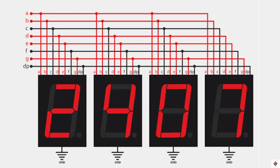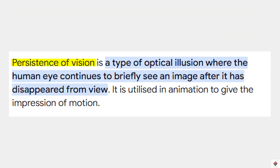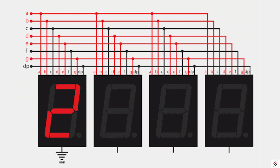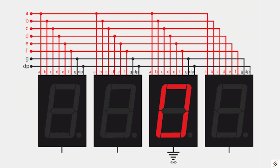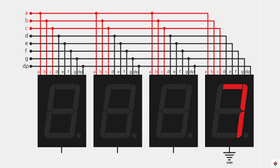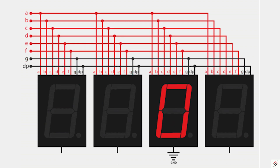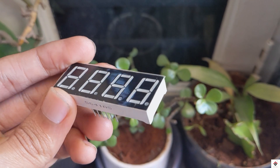To print different digits at the same time is practically not possible since all segment pins are common. This is where persistence of vision comes into play. For example, to display 2407: print 2 on the first digit, wait a short time, then switch it off; then 4 on the second digit, wait, switch off; then 0 on the third digit; and finally 7 on the last digit. When this happens at a fast rate with minimal delay, the human eye cannot detect the switching and we perceive that 2407 is continuously displayed. This is the basic working principle of a multi-digit seven segment display.